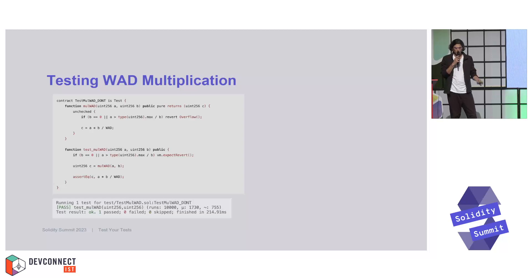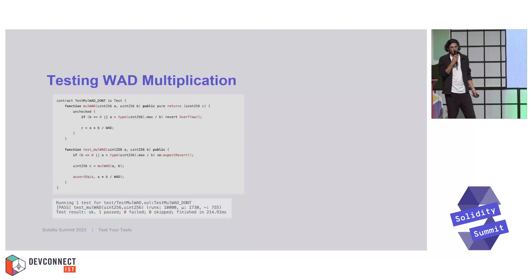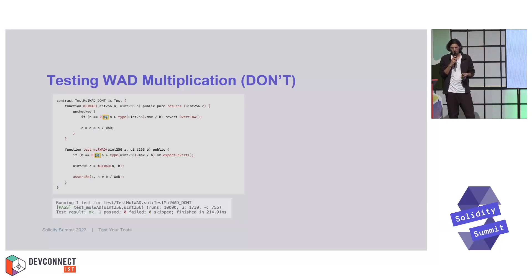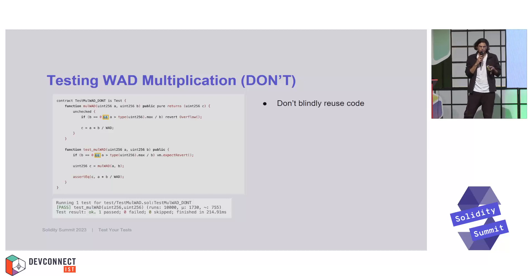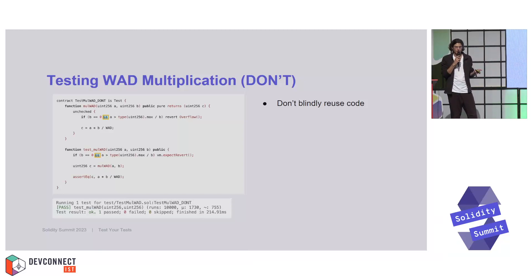Does this sufficiently convince you? Here we're using an incorrect boolean operator — we're using the OR operator where we should have been using AND. However, because we just blindly reused the code and copy-pasted it into our test, there's no way for the fuzzer to find this. This can be less obvious when you're reusing untested helper functions and running into the same mistake.